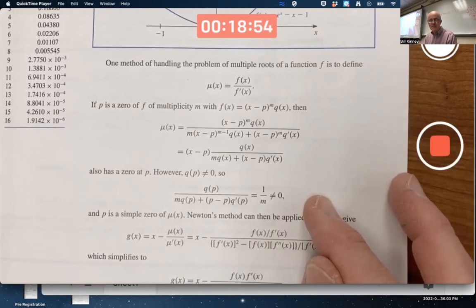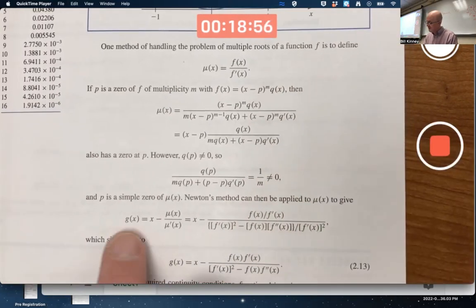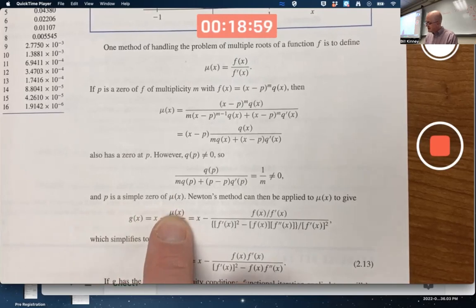And that's what they confirm here: p is a simple zero of mu(x). And so then you apply Newton's method to mu(x) effectively instead of f(x) divided by f prime.